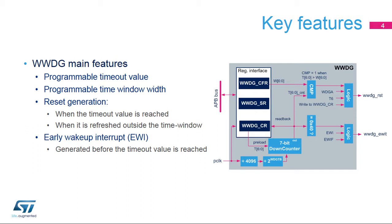The Window Watchdog offers several features. The user can program the timeout value and the window width according to application needs. It can generate a reset under two conditions: when the down-counter value becomes less than or equal to 0x3F, or when the watchdog is refreshed outside the time window.